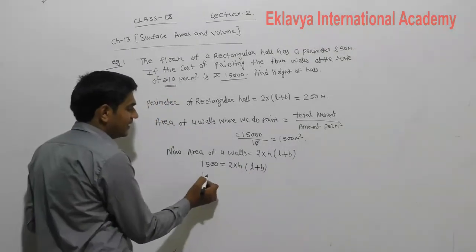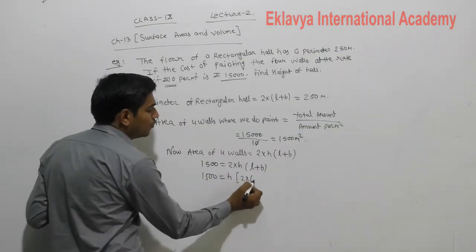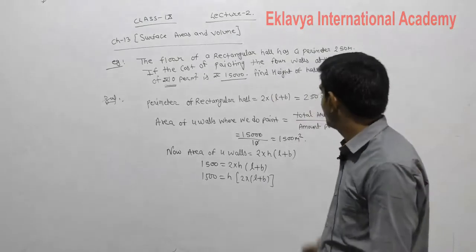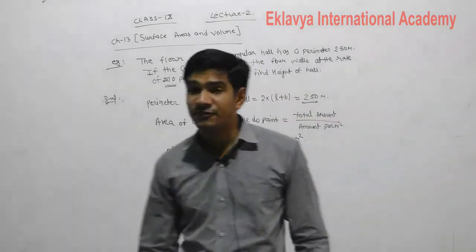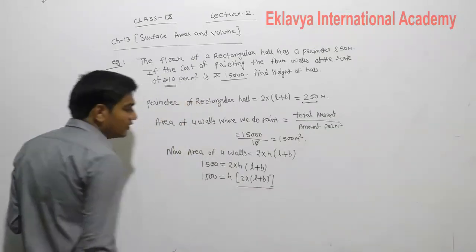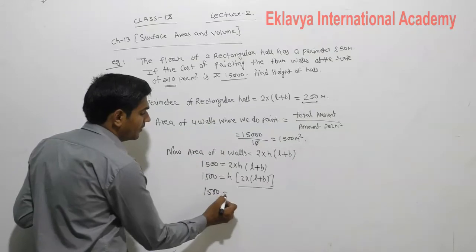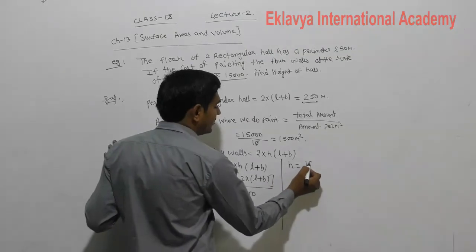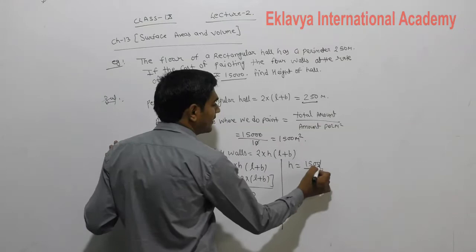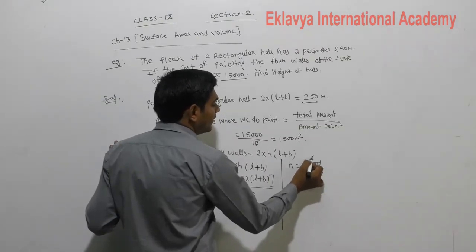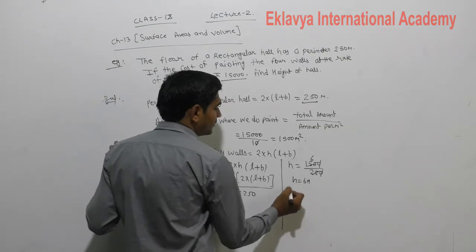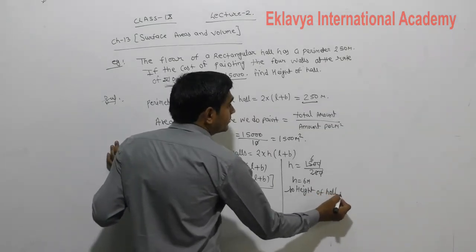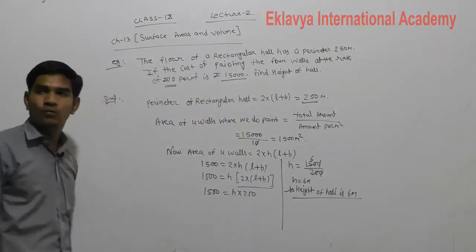That can be written as 1,500 = H × 2(L + B). But in the question it is already given that the perimeter of the rectangular hall is 250 meters, so 2(L + B) = 250. Therefore height H = 1,500 ÷ 250. Calculating: 1,500 ÷ 250 = 6. So the height of the hall is 6 meters.